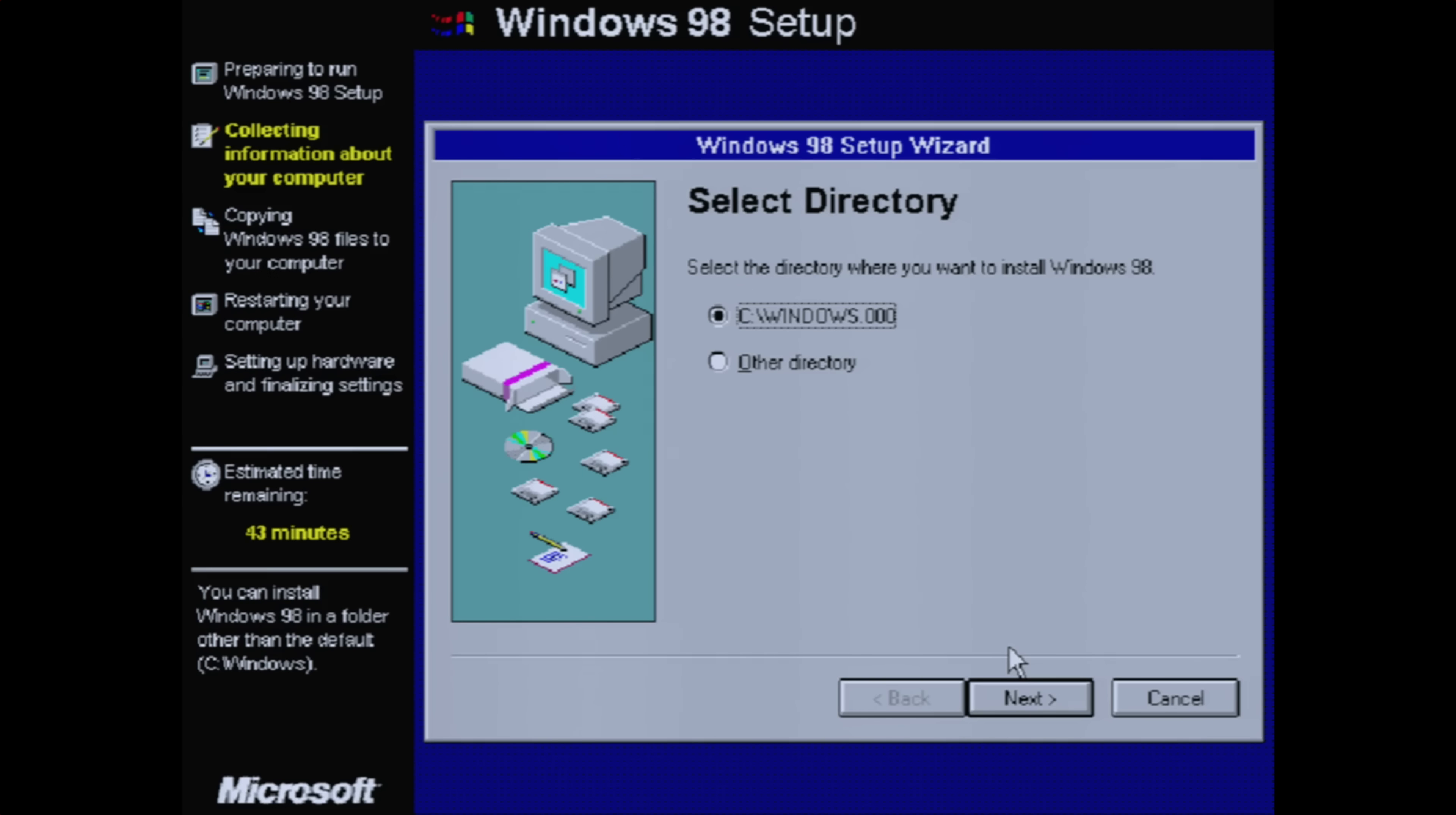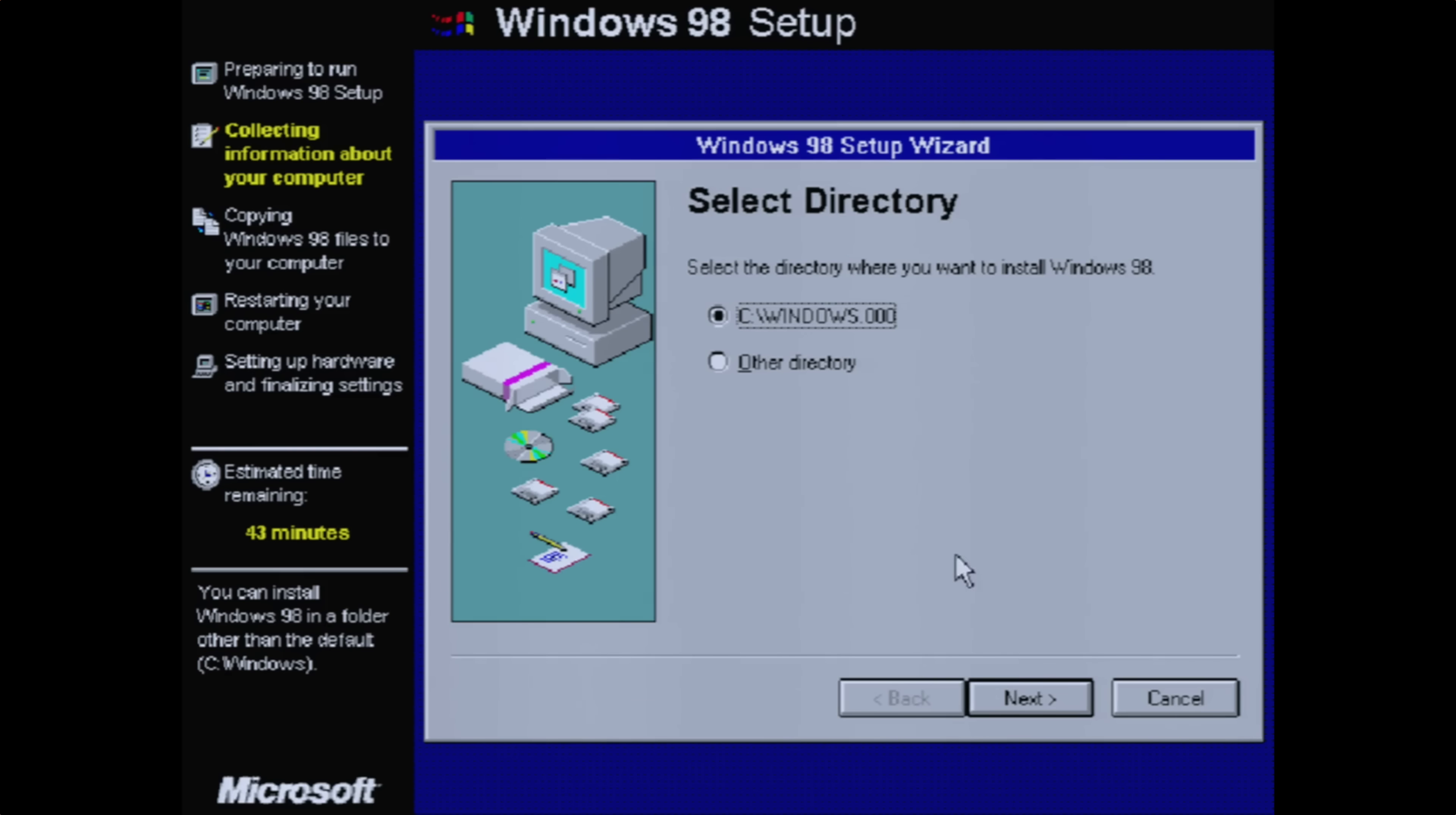And that part is right here where it's asking you to select a directory. By default, because it already sees a Windows install folder on the C drive, it's not going to want to install in there. It thinks that maybe that's another version of Windows, or maybe a corrupted version, and you're trying to reinstall a fresh one. So it's going to avoid trying to install in there. That's why it's saying it wants to install in this C windows dot 000 directory. We don't want to do that. That's kind of going to defeat the purpose of what we're doing here. So let's choose other directory, hit next.